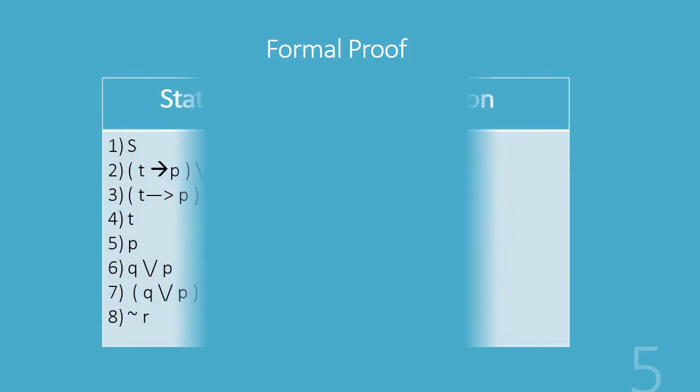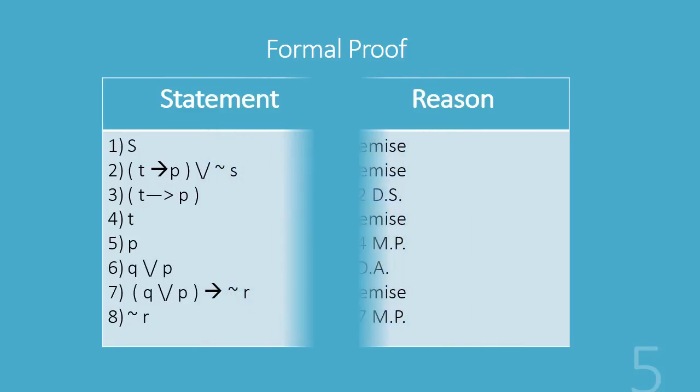When we look at the formal proof we'll have a statement on one side and the reason on the other. So we started with s and t implies p or not s, both of those were premises, and from that we got t implies p by 1, 2 DS. We then brought in the t which was the premise, and from those two, three and four, using modus ponens we were able to get p. So notice the reason for the p is steps three and four and the argument form modus ponens.